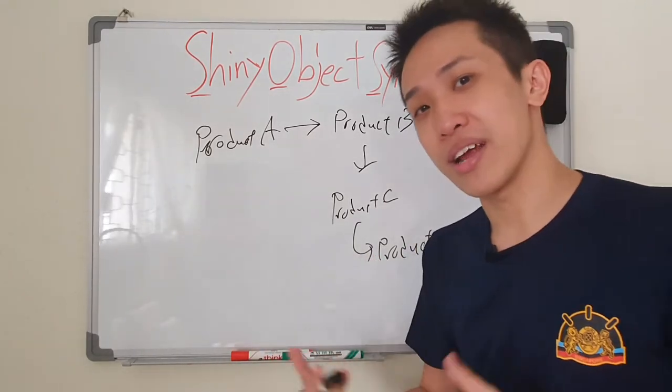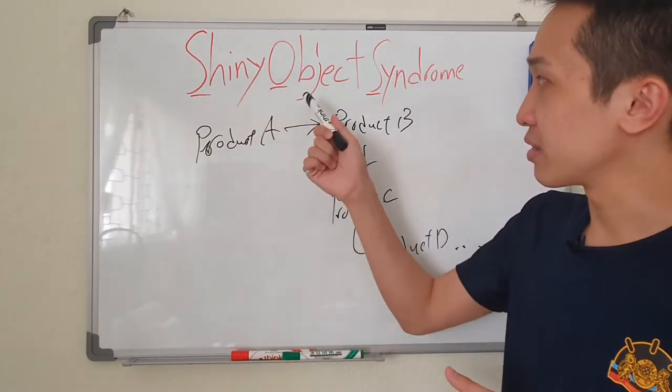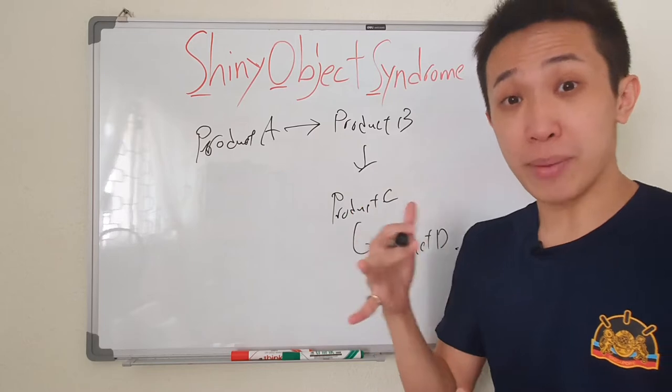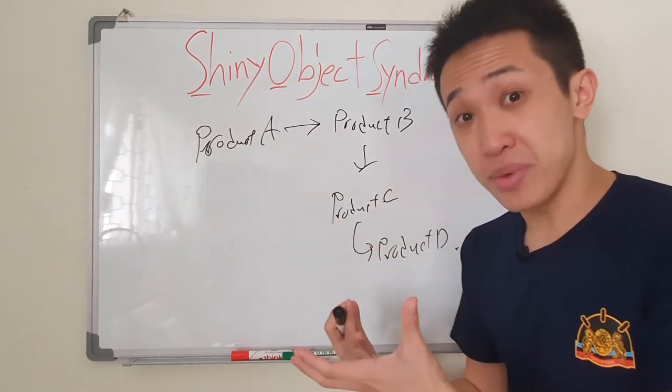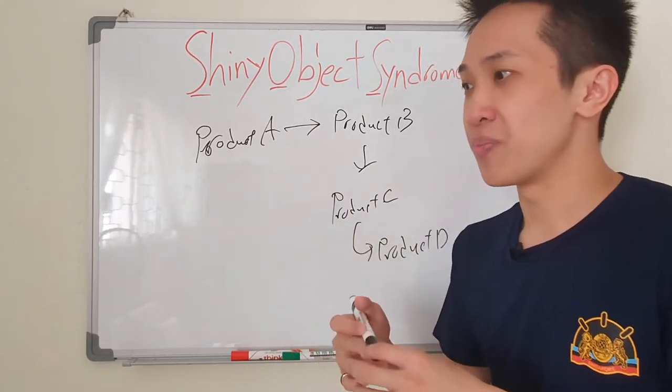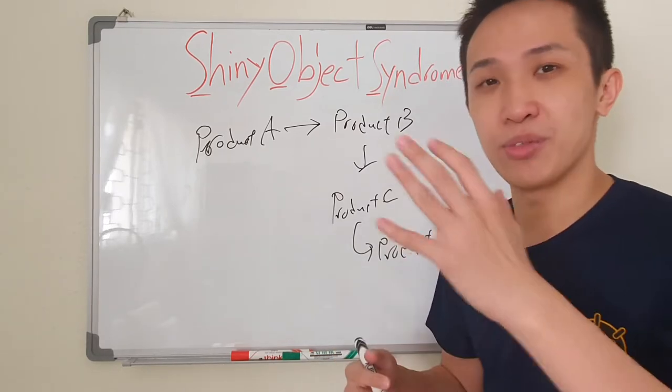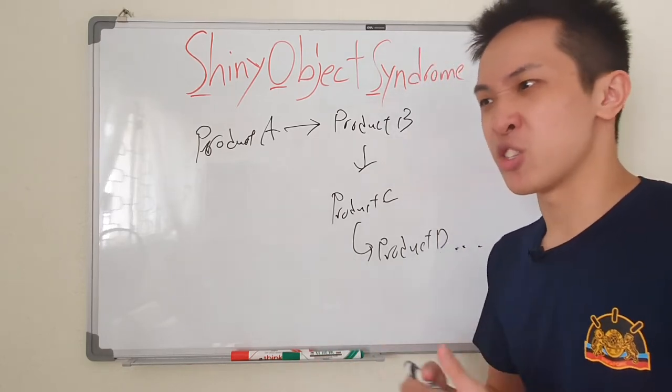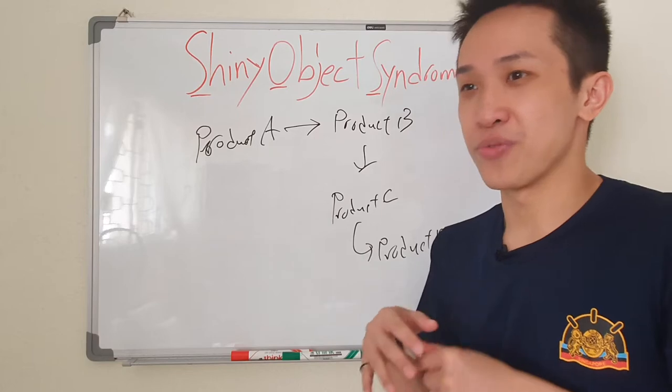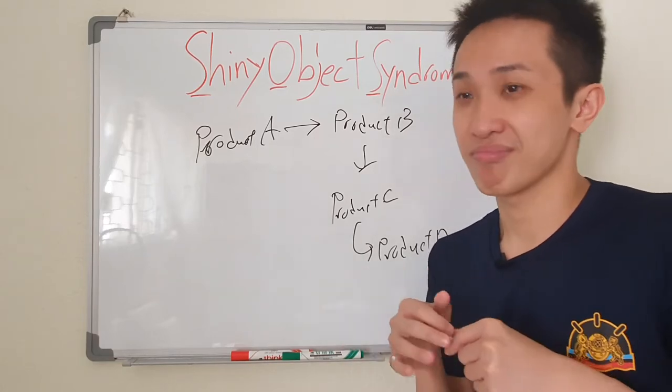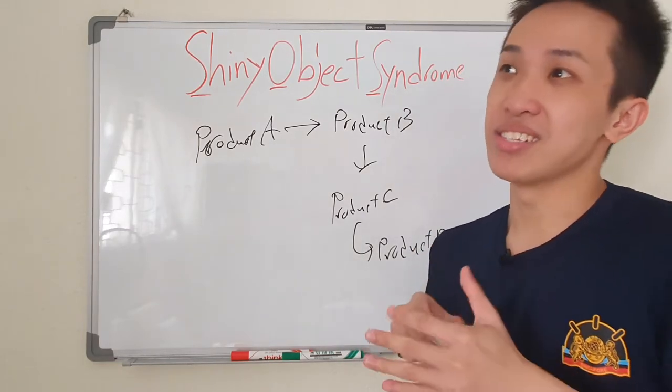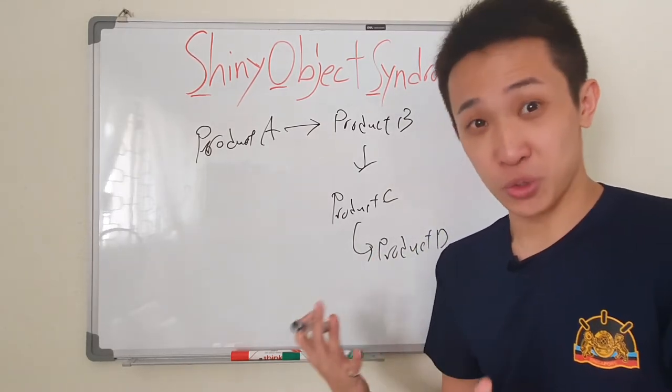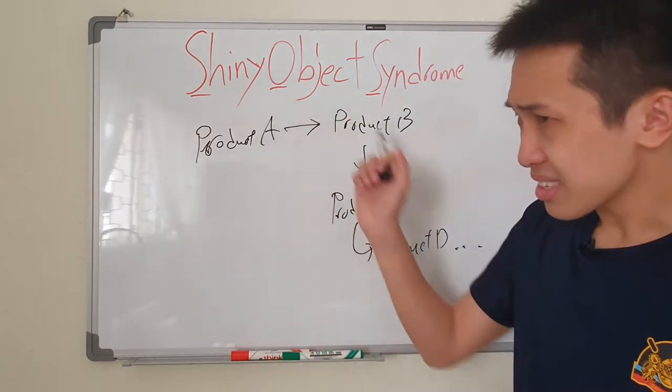That is a telltale sign that you have shiny object syndrome. Now my students experience the same thing despite being in a high ticket program with me. They're still hooked onto other products that maybe cost like $17, $19 that promise them the world. They say hey, use this software, make money in under 24 hours. Sounds pretty easy, isn't it? Chances are things that sound too good to be true are often too good to be true.